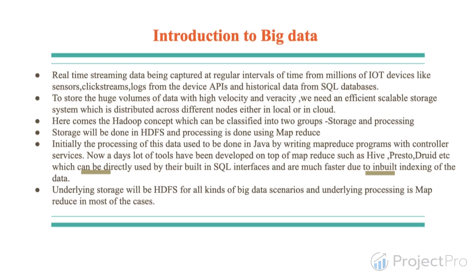Once the data is in a clean format with outliers, duplicates, and special characters removed, we can have a schema in place to validate the data. In the data validation step, we define a schema and validate it against the cleaned data to find any new rows or fields added to the existing schema, data type errors, or other issues. We can generate process logs and error logs using Python during this validation process.